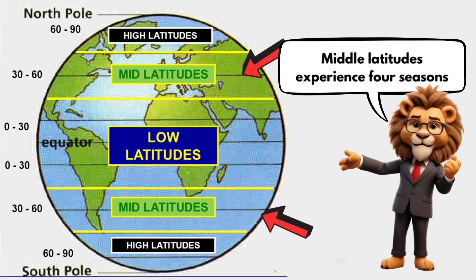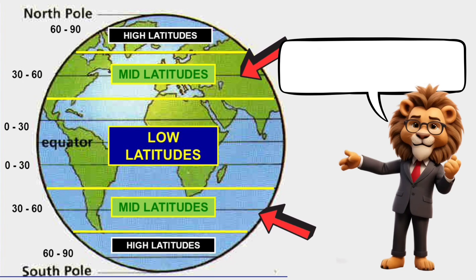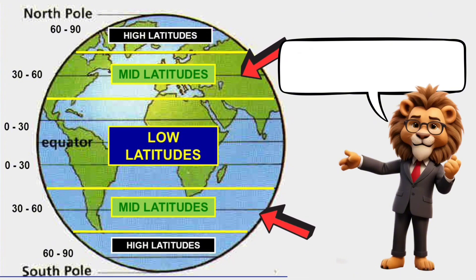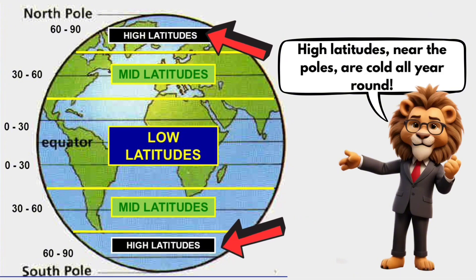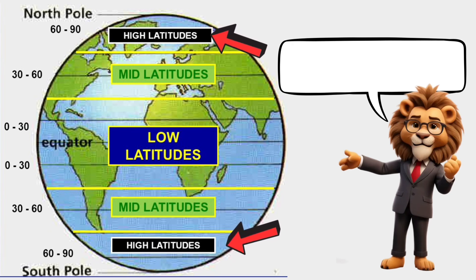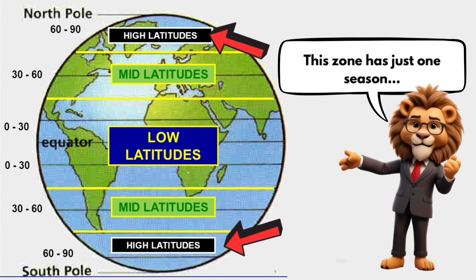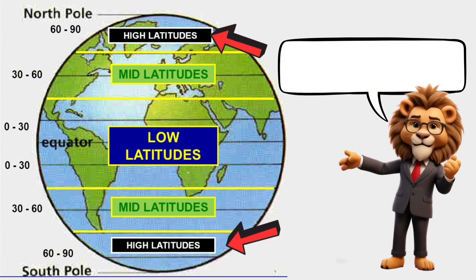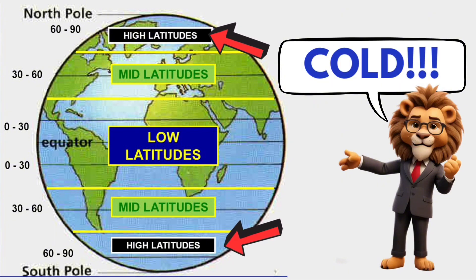Middle latitudes experience four seasons: winter, summer, spring, and fall. The high latitudes near the poles are cold all year round. This zone has just one season: cold.